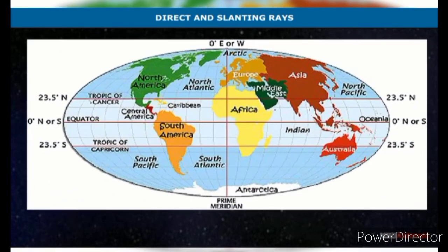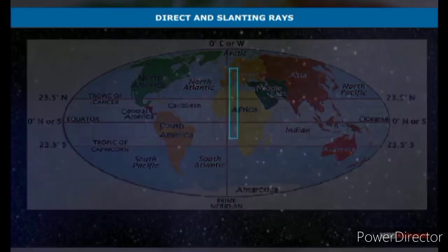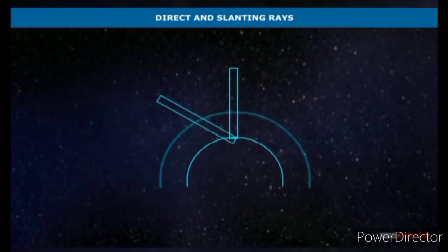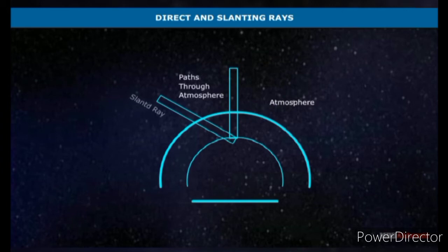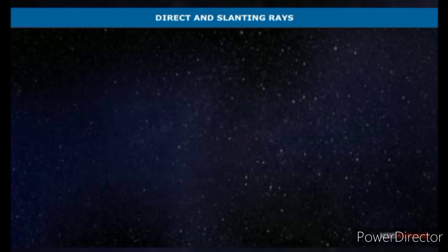The sun never shines vertically overhead at any place beyond the Tropic of Cancer (23° 30' North) and the Tropic of Capricorn (23° 30' South). The vertical rays are direct and thus cause more heat. The slanting rays pass through a greater distance in the atmosphere and cause less heat. The length of the day decreases from the equator towards the poles.